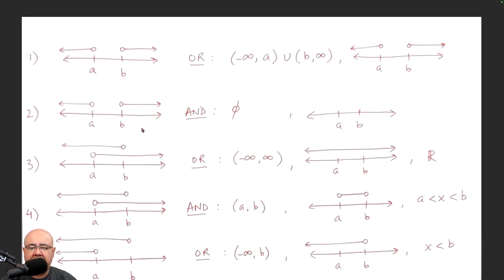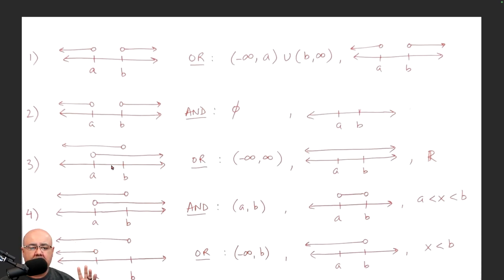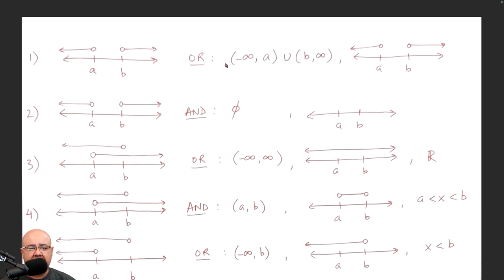Hello. I hope that this video settles whatever confusion still lies with regards to these topics. So let's say we are given these intermediate graphs on the left-hand side. You're going to solve a compound inequality, and this is what the graphs look like as your intermediate step — meaning this is the first thing that you're graphing. The word that I want us to use is listed in the middle, and on the right-hand side are the final answers. Anything after the colon is the final answer.